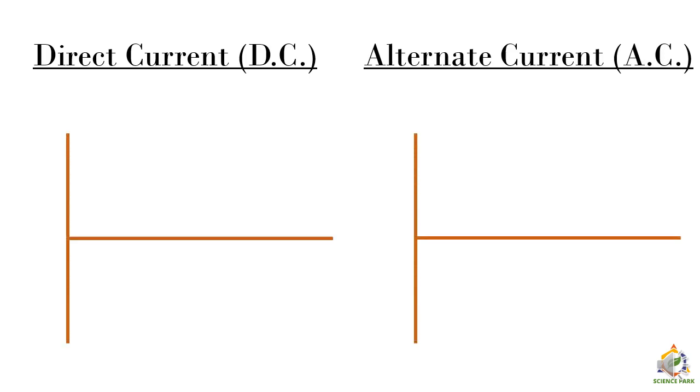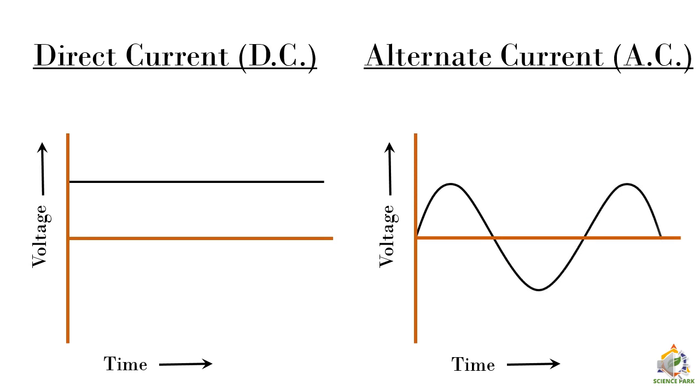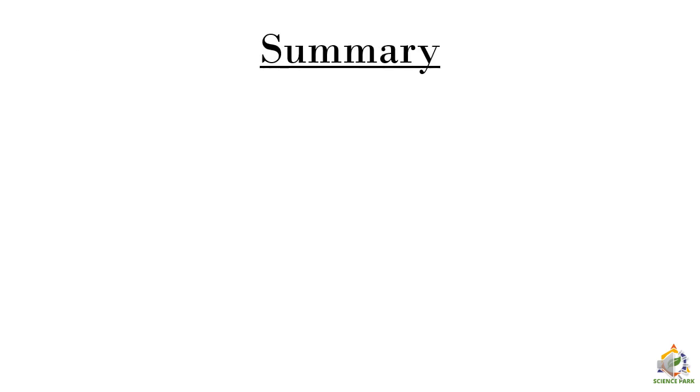The voltage changes with time. Here we have two plots. The y-axis represents the voltage or potential difference, and the x-axis represents time. In direct current, the voltage or the potential difference does not change with time. It is constant throughout. And in alternating current, the voltage changes with time. So this is the difference.